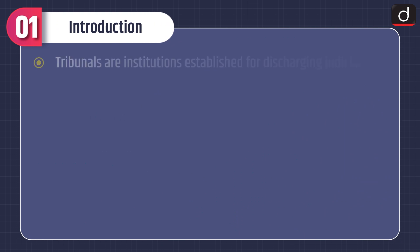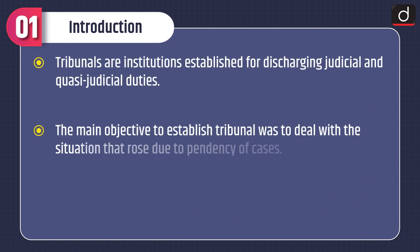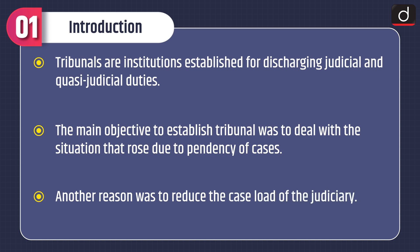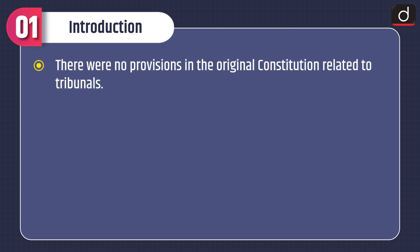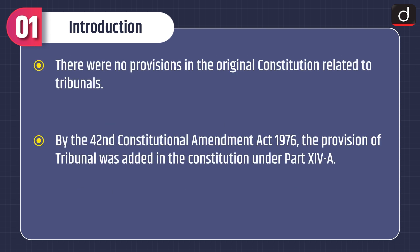Let's have a look at the introduction. Tribunals are institutions established for discharging judicial and quasi-judicial duties. The main objective to establish tribunals was to deal with the situation that arose due to pendency of cases. Another reason was to reduce the case load of the judiciary. There were no provisions in the original constitution related to tribunals. By the 42nd Constitutional Amendment Act 1976, the provision of tribunal was added in the constitution under Part 14A.